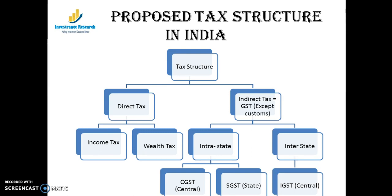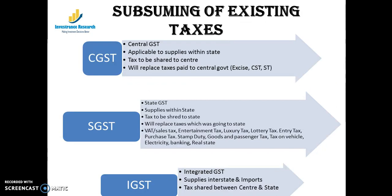IGST comprises both CGST and SGST combined — so interstate transactions are a combination of central and state GST. CGST is the Central GST, applicable to supplies within a state, and the tax revenue collected is shared with the center. All central taxes like excise, central sales tax, and service tax will come under the CGST bracket.